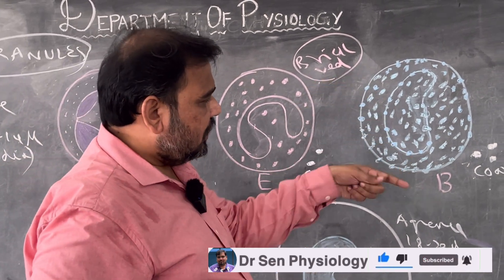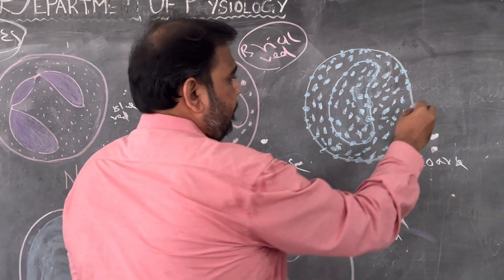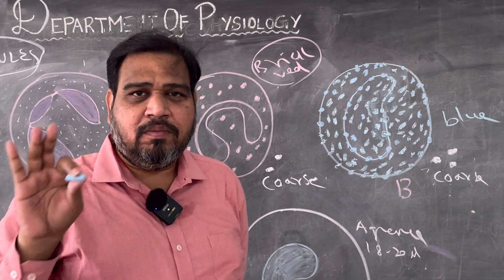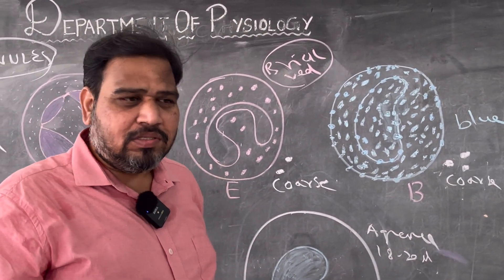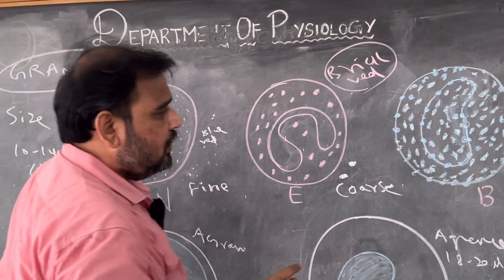Now coming to basophil. As you see the granules are coarse, color simple: blue color. So basophil usually when you see in the microscope under 100x it will be coarse, blue color granules. Same size, all the three are 10 to 14 microns in diameter.